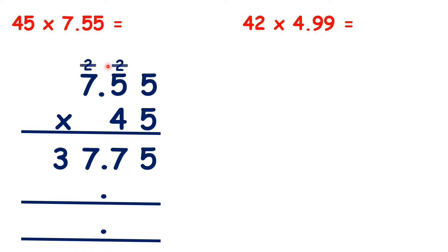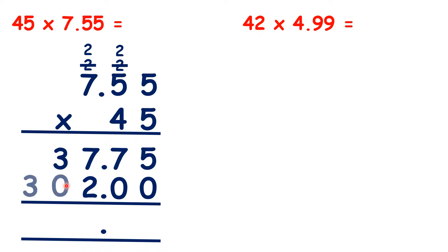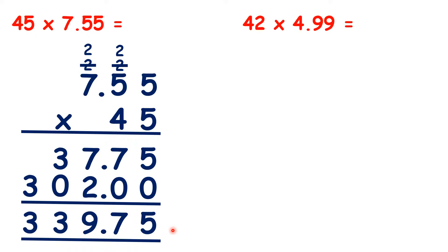Now we can cross out our working and write a 0 as the last digit of our second answer line. 5 times 4 is 20. 5 times 4 is 20 plus 2 is 22. And 7 times 4 is 28 plus 2 is 30. Now, if we add up our totals, because we've already put our decimal point in, we can see that our final answer is 339.75.